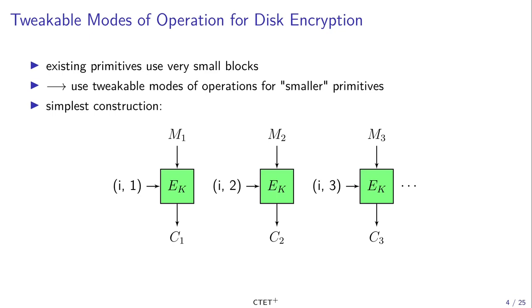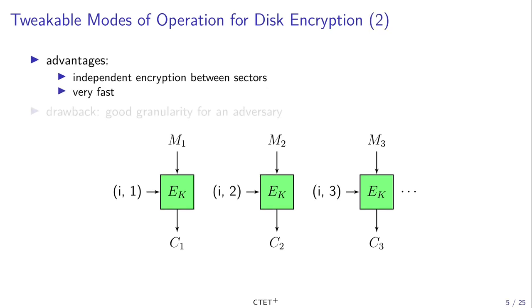The solution is to use a tweakable mode of operation for a smaller primitive, like a block cipher or tweakable block cipher with a small block size. In that case, the simplest construction is to use a tweakable block cipher, and in order to encrypt each block of a sector M1, M2, M3, you just use the tweakable block cipher. This simple construction does have some advantages. It provides independent encryption between sectors and is very fast, as every block in a sector is encrypted independently from the others.